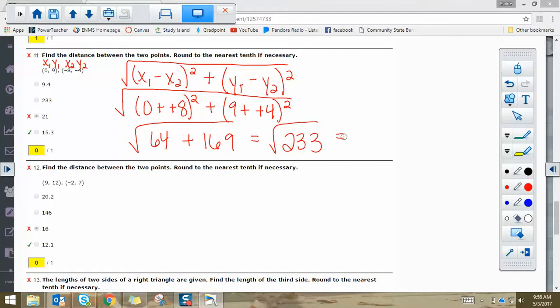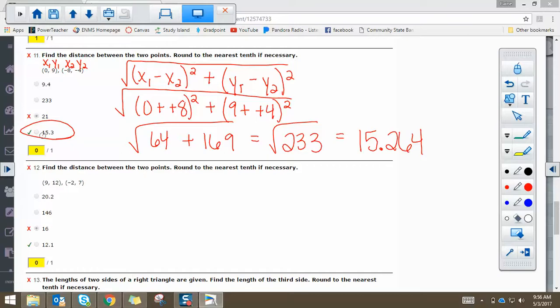233 is not a perfect square, but that doesn't matter. You can still square root it. You're just going to get a decimal. And here, my calculator gives me 15.264, and you can see that rounds to 15.3 if they're rounding to the nearest tenth, like it says in the directions.